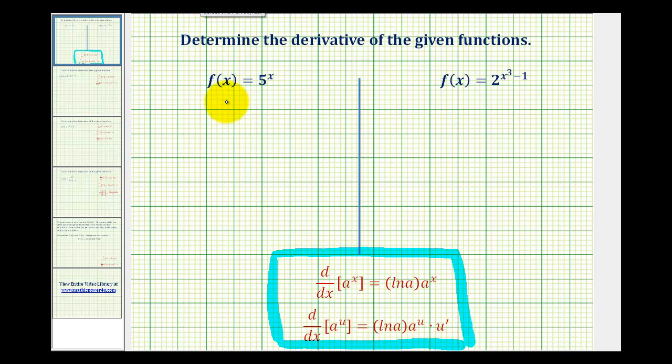Looking at our first example, we have f of x equals 5 to the power of x. So notice that our base of 5 is going to be equal to a. And since our exponent is x, we don't need to apply the chain rule.